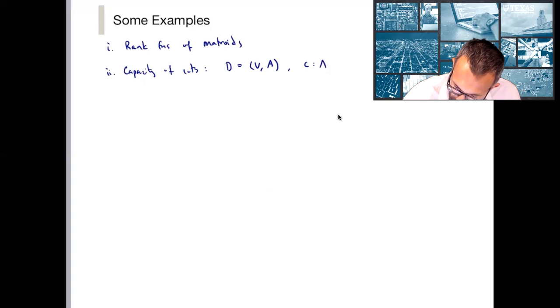So let's call this a capacity function. It maps arcs to real numbers or really rationals. So this is a capacity function. And now let's fix two special nodes R and S of V.